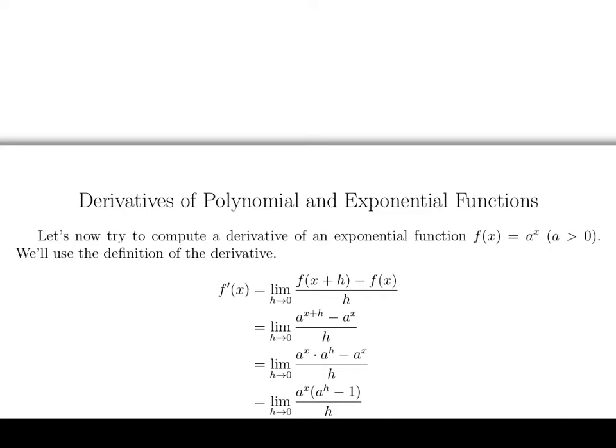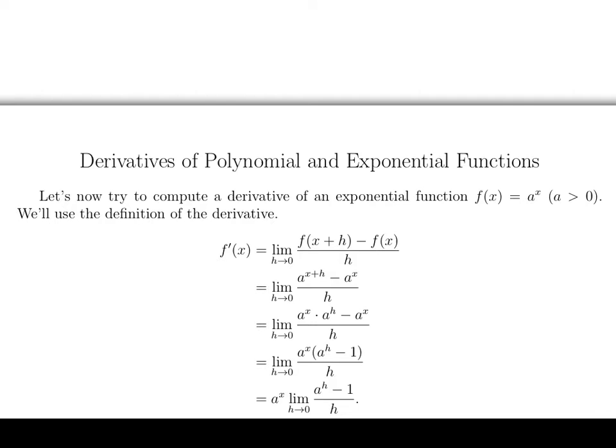Okay, now comes the key step in everything that we're doing here. What we're going to do is pull that a to the x outside of the limit. It looks like this. The reason we can do this is because this is a limit as h goes to zero. So as far as the limit goes, a to the x is just a number. And so we're just using a limit law to pull that multiplicative constant outside of the limit.